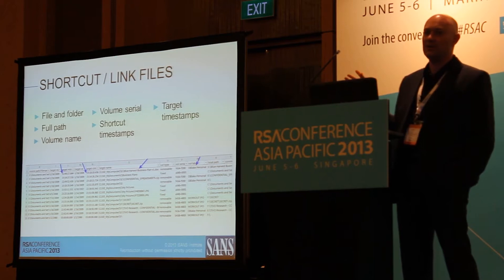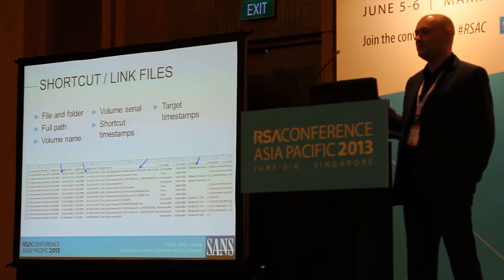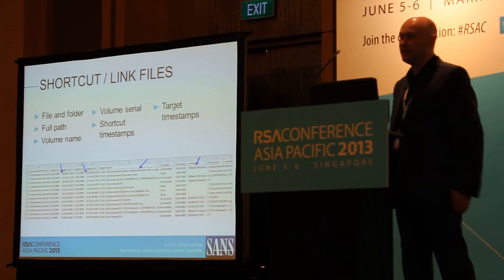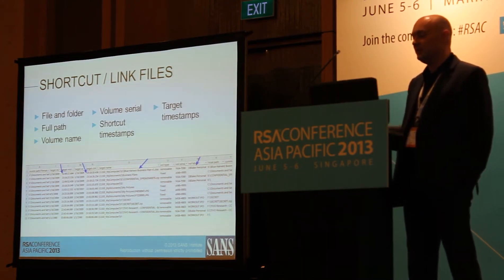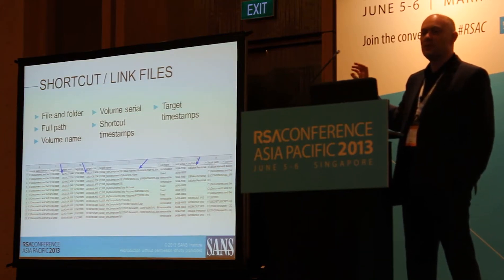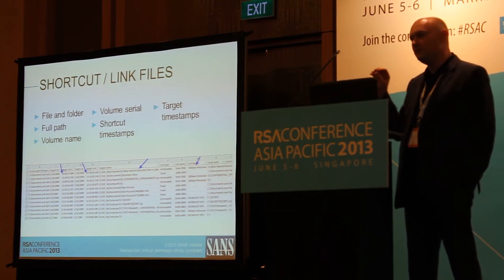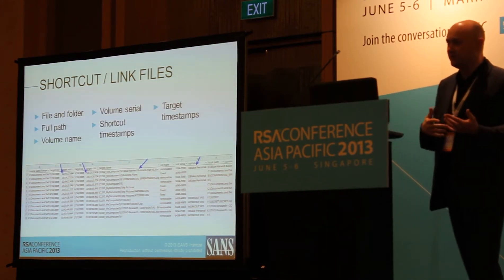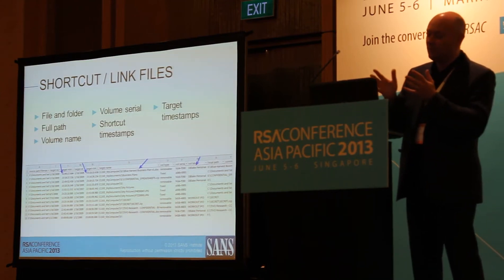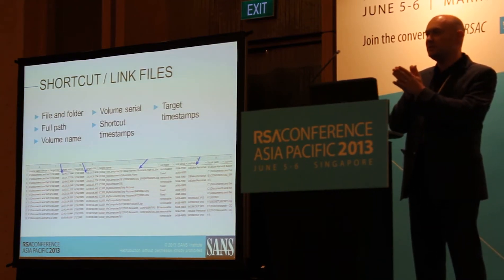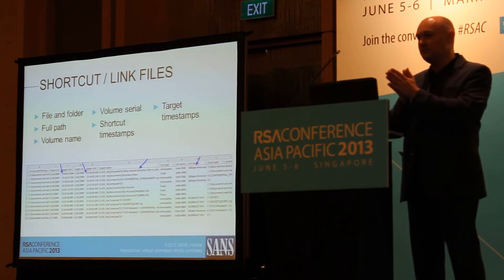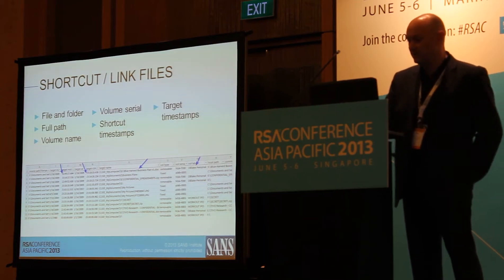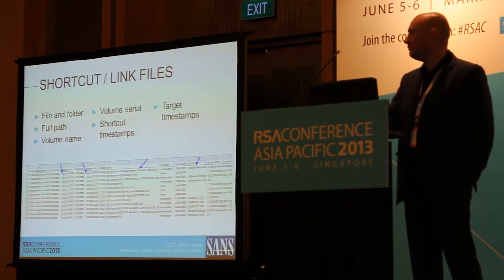If you think about how many of these are sitting on a local Windows system, they can easily be well over a million when you count live link files and those recovered through file recovery. This is a good example of what we do as forensic examiners — we find these breadcrumbs, these little bits of information that exist on a computer. We know where to find them, how to recover them, how to analyze them, and how to use them to reconstruct what was happening at a certain point in time, which is essentially what forensics is all about.